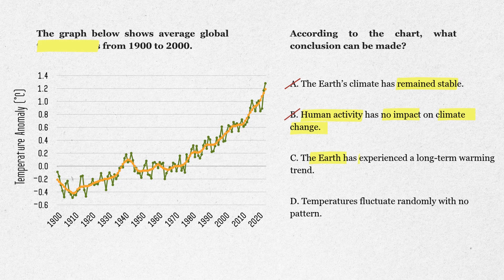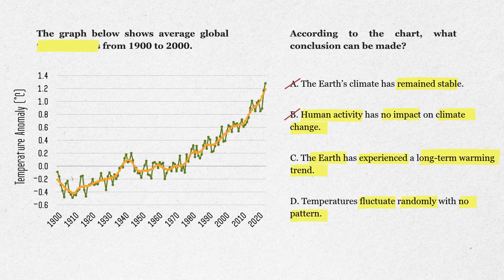Option C: the Earth has experienced a long-term warming trend. Yes, that matches perfectly with the rising line from 1900 to 2000. Keep this one. Option D: temperatures fluctuate randomly with no pattern. Wrong — there are small ups and downs, but overall the line moves upward in a clear pattern. Cross it out. So the best answer here is option C: the Earth has experienced a long-term warming trend.